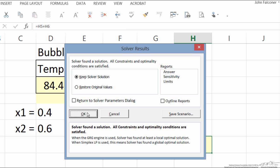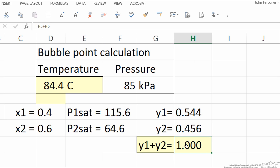I get this output: solution 84.4 degrees. The mole fractions add to 1, so 84.4 degrees centigrade is the bubble point temperature.